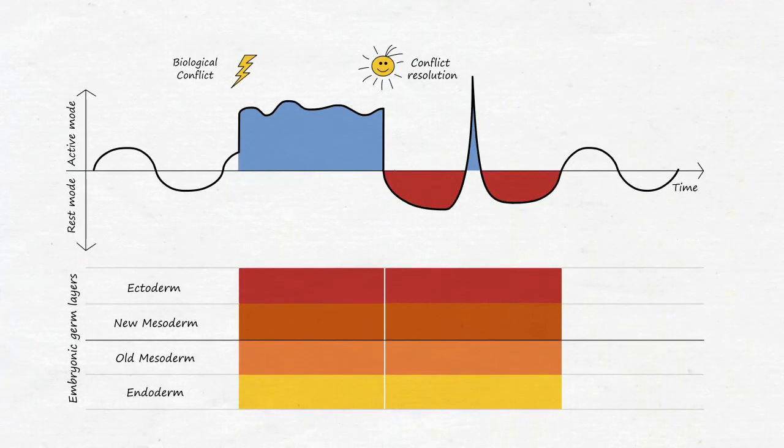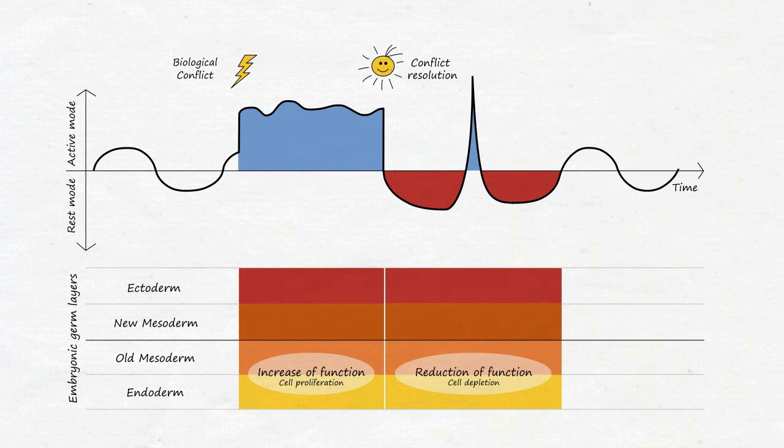There are two ways in which individual tissues can basically adapt to a situation perceived as conflictive. Possibility 1: The function of a tissue is first increased in the conflict active phase. In the salivary glands, for example, an increase in function naturally produces more saliva. After resolution of the conflict, the function is then reduced again so that by the end of the SBS, the normal tissue function is restored.